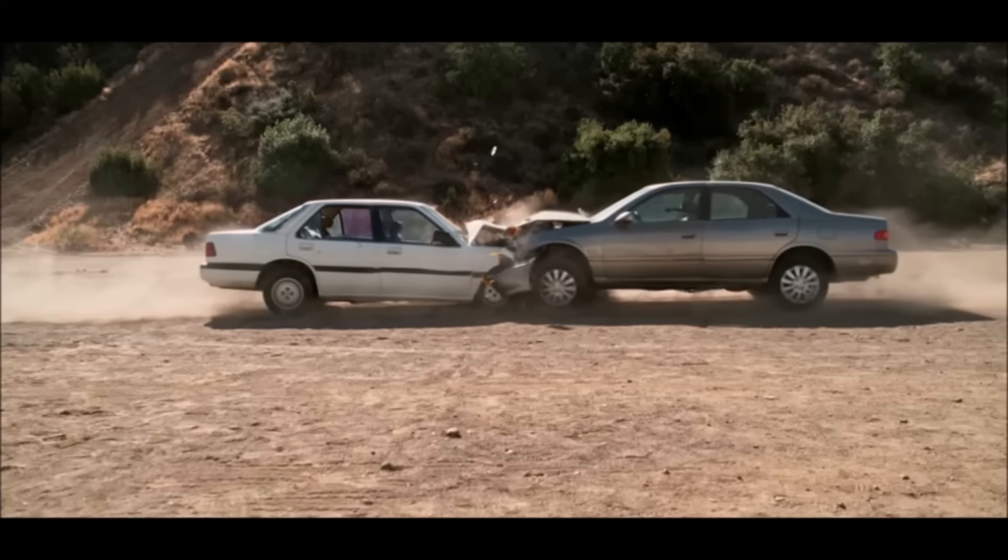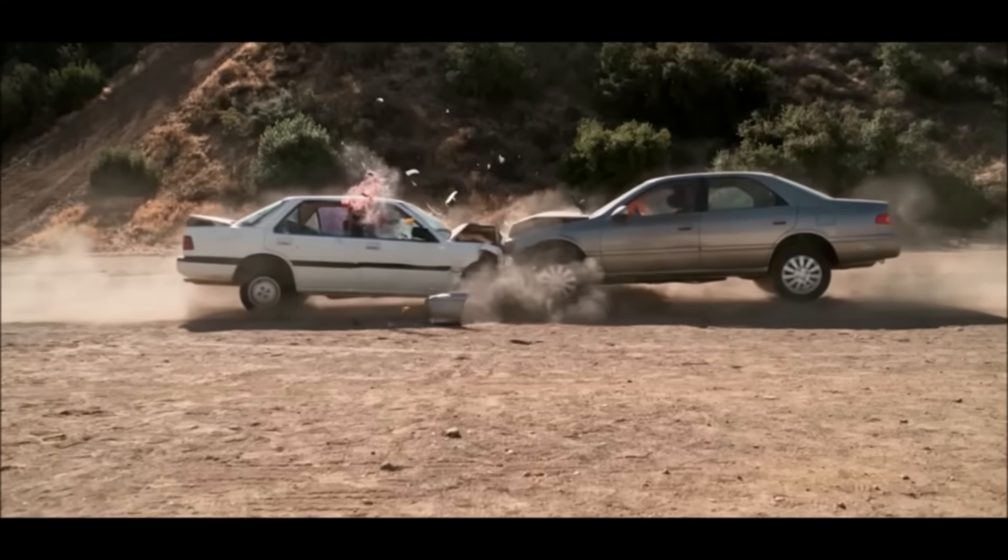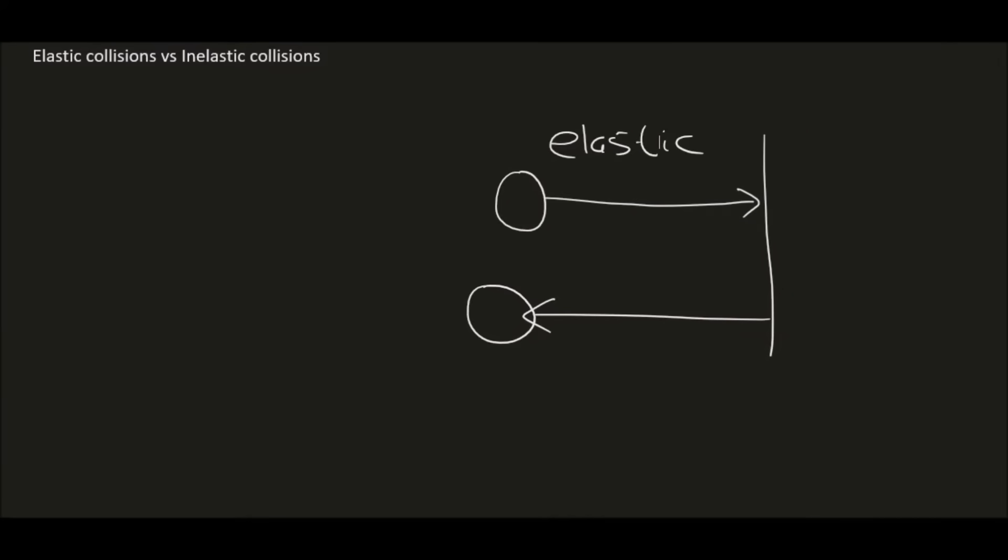So notice how the two cars are not moving apart. And so by now you should have a very good idea of what elastic means and inelastic. With elastic, the objects maintain their energy. So if they initially hit the wall at five meters per second, they will bounce off at five meters per second. But when we saw the two cars, we see that the velocities change and that is called inelastic.